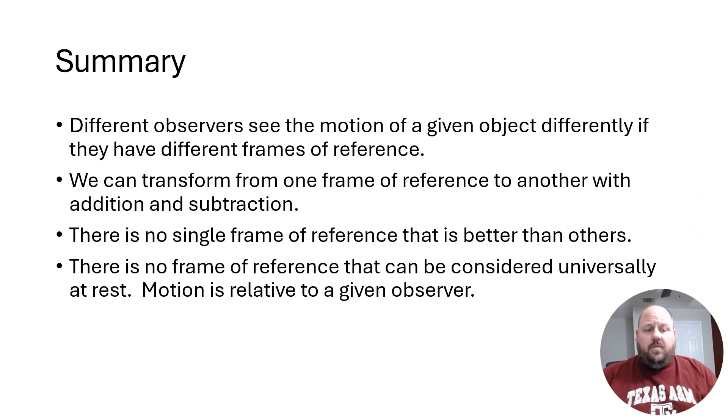So to kind of summarize this real fast, different observers are going to view motion differently if they have different frames of reference. You can go easily from one frame of reference to another simply by adding and subtracting in most cases. There's not a frame of reference that's better or worse than any other frame of reference. Frame of reference is always a matter of convenience for the observer or whoever is doing the physics behind a particular example. There's no place in the universe that is absolutely still. There's no absolute frame of reference. All motion is relative to a given observer.